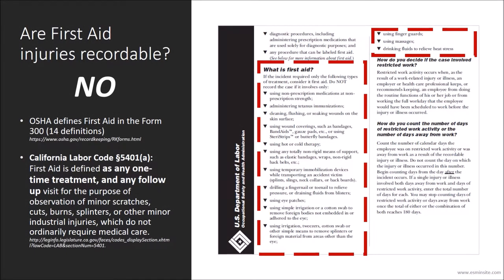Are first-aid injuries recordable on your OSHA 300? The answer is no, they are not. OSHA defines first-aid in 14 different ways, which you can find on page 3 in the Form 300 instruction guide.